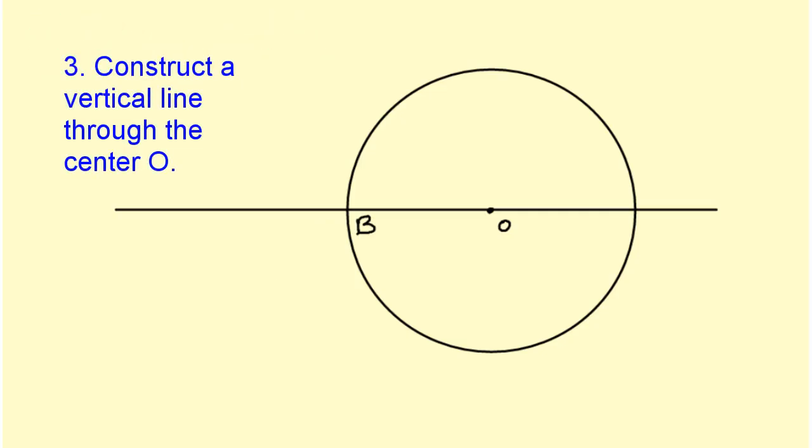Next I need to construct a vertical line through the center O. To do that, I'm going to need to construct the perpendicular bisector of the diameter. I will put the point of my compass here and here and I will draw my intersecting arcs. Because I already have the center to use as one point of my line, I only need one set of intersecting arcs in order to draw my line.